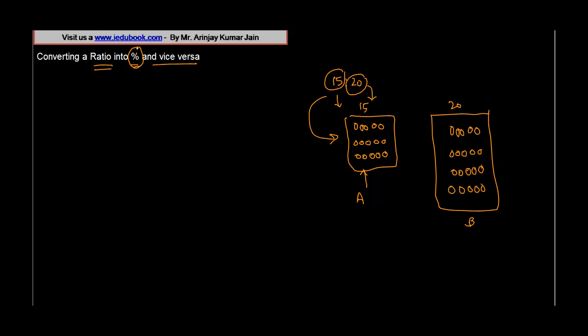But if you have to say what is the percentage of balls held by team A vis-a-vis team B, what will you say? Percentage, as we discussed earlier, means per hundred. So basically, what would have happened if B had, instead of 20, hundred balls? Then per hundred balls of B, how many balls would team A have? That is the percentage.